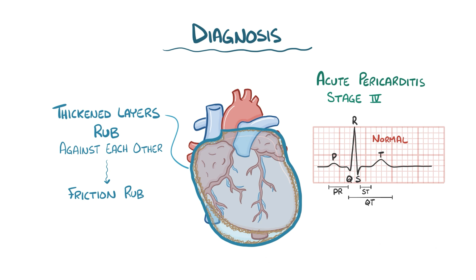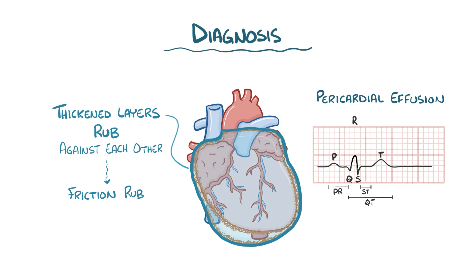On an ECG, pericardial effusions — especially large ones — can show low QRS complex voltage, or electrical alternans, which is where the QRS complexes have different heights, as a result of the heart swinging back and forth in a pool of pericardial fluid.